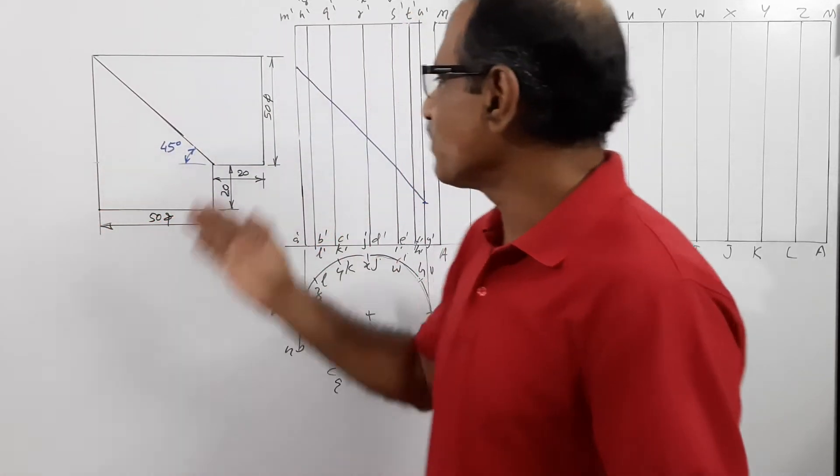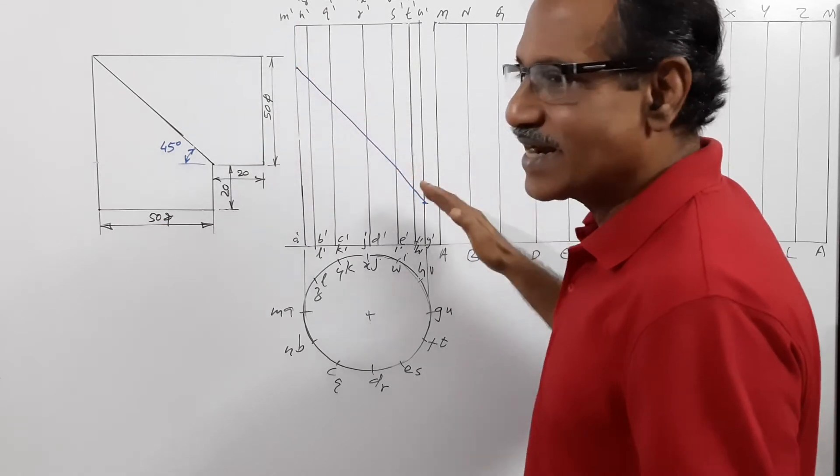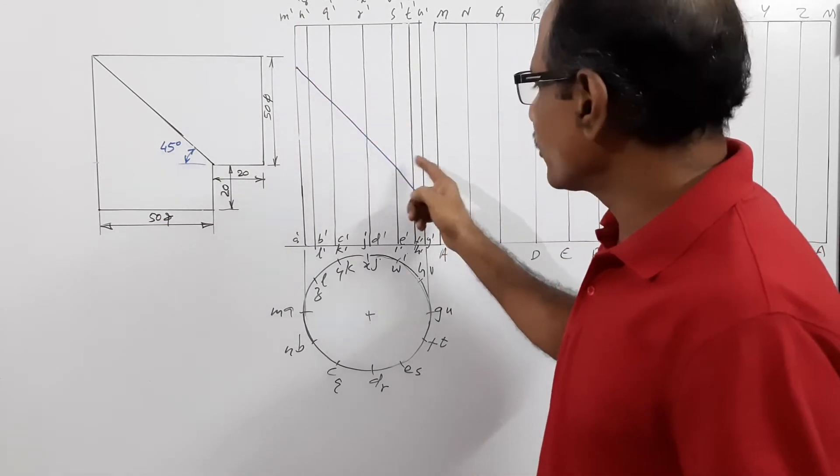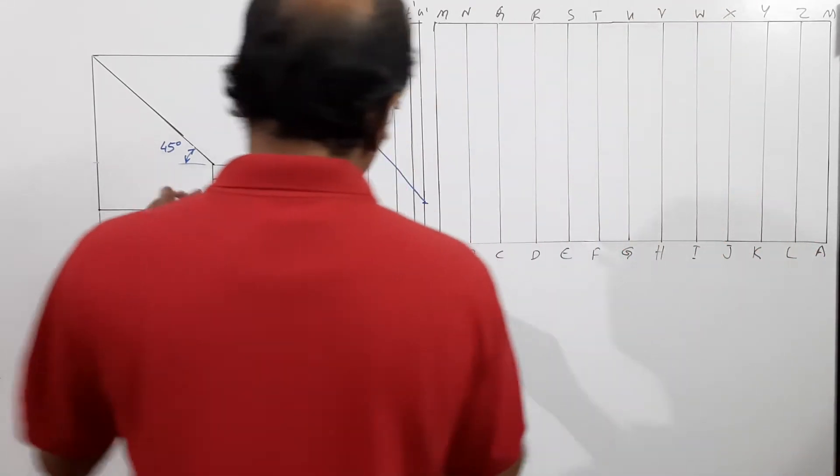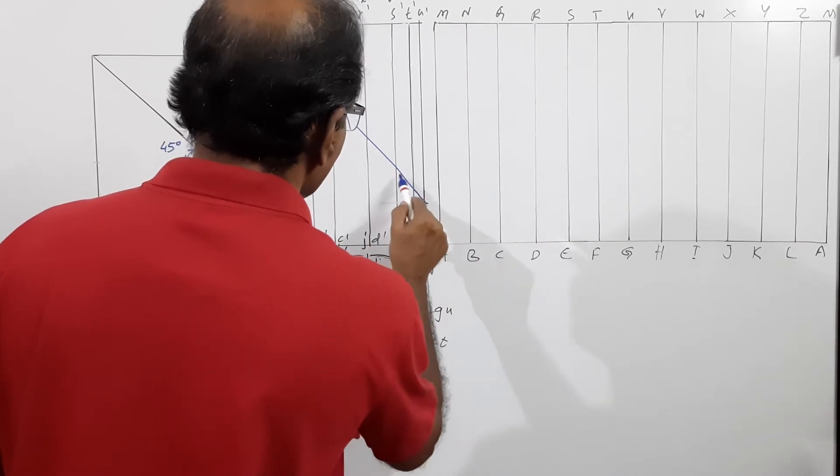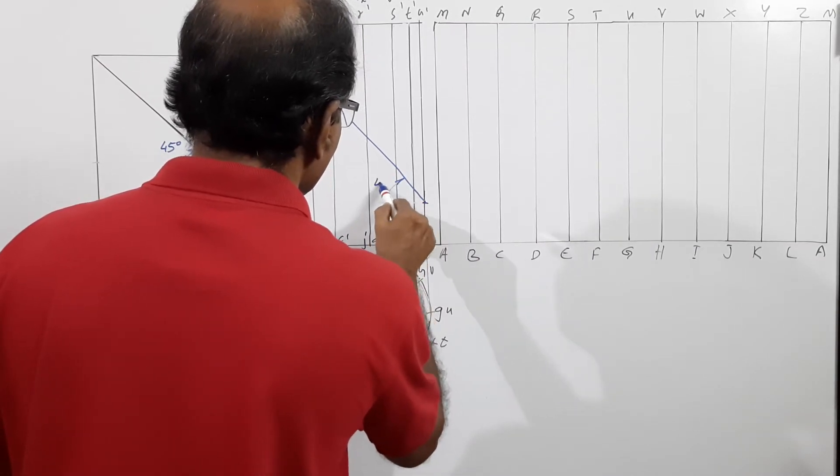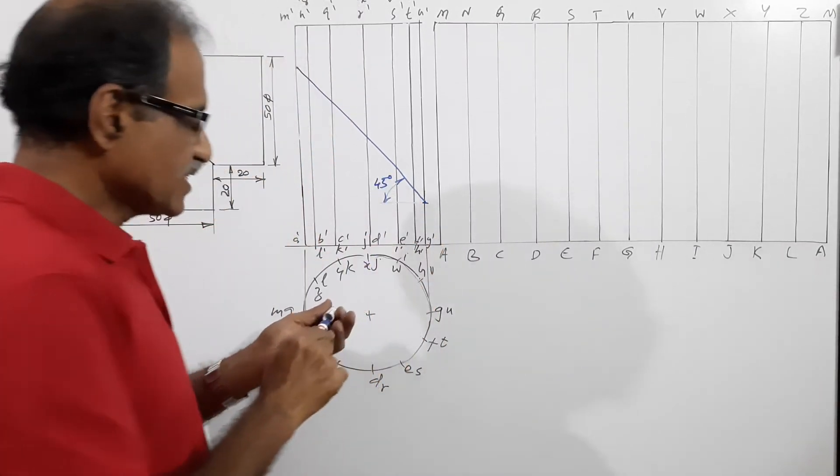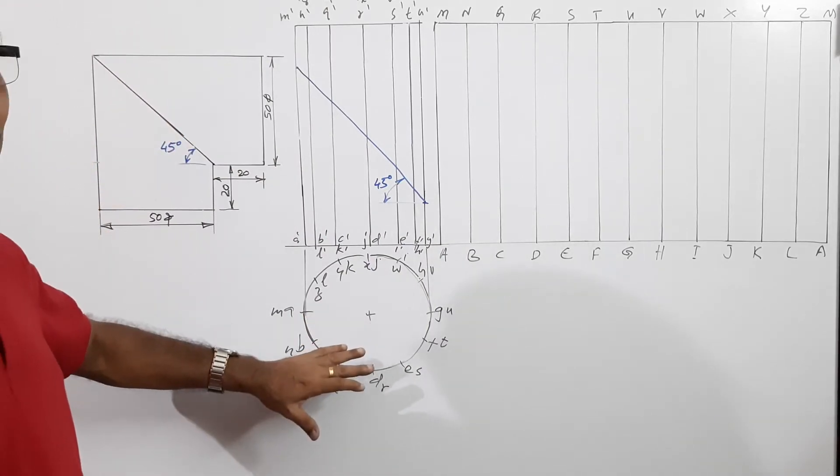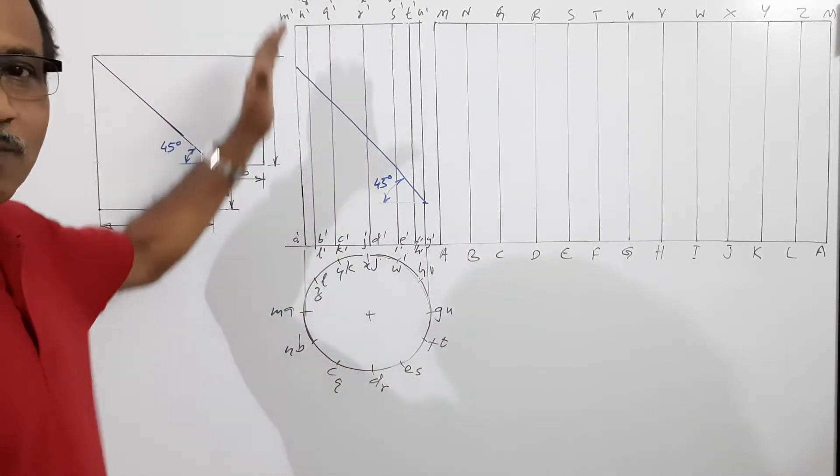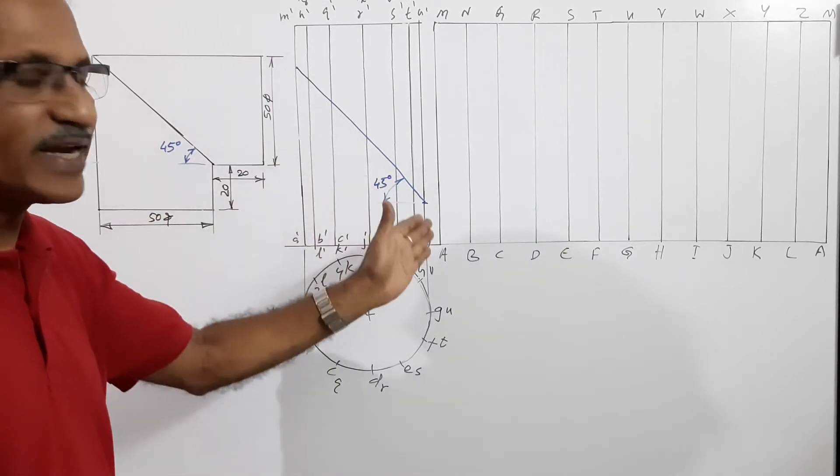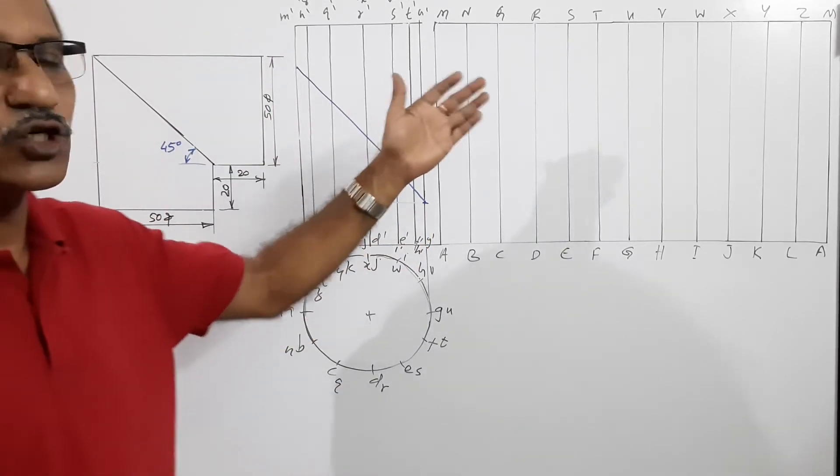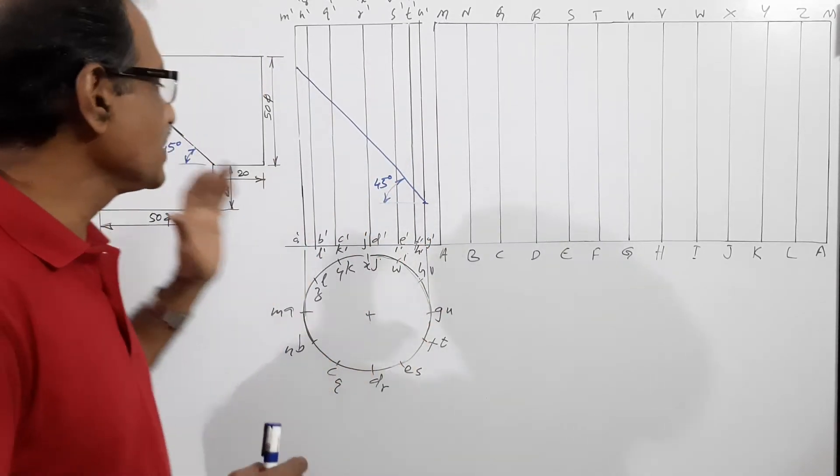It's a cylinder of 50 mm diameter, 90 mm height cut by a 45 degree cutting plane. You are asked to draw the development of this elbow.